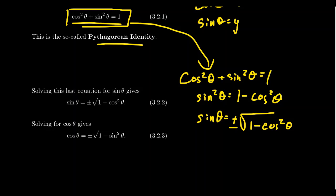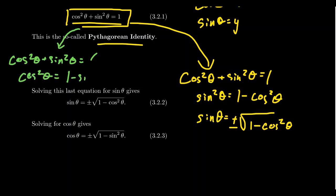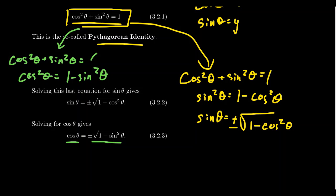Similarly, we can take the same identity and solve for cosine. Starting with cosine squared theta plus sine squared theta equals 1, subtract sine squared from both sides to get cosine squared theta equals 1 minus sine squared theta. This Pythagorean identity is useful if you have cosine squared but prefer sine squared — you can substitute those. If you take the square root of both sides, you get cosine equals plus or minus the square root of 1 minus sine squared.